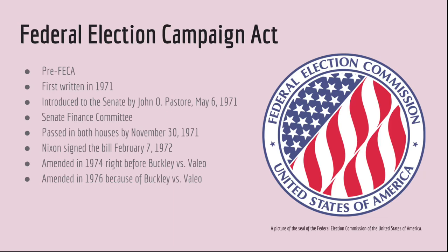After all these acts, there came the Federal Election Campaign Act. It was written in 1971 and introduced in the Senate by John O. Pastore on May 6, 1971. This bill was given to the Senate Finance Committee and was passed in both Houses of Congress by November 30, 1971. On February 7, 1972, President Nixon signed the bill into law and it was effective immediately as of April.